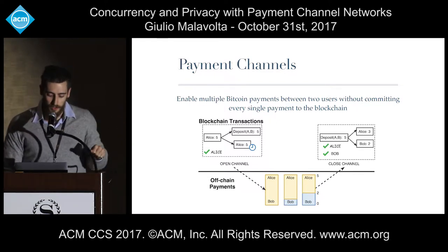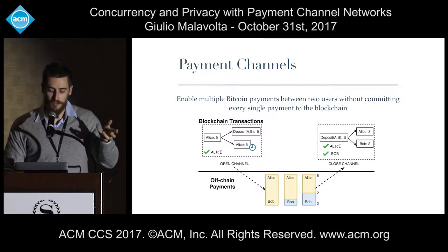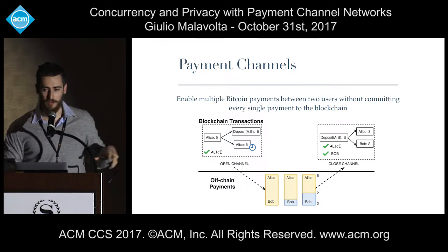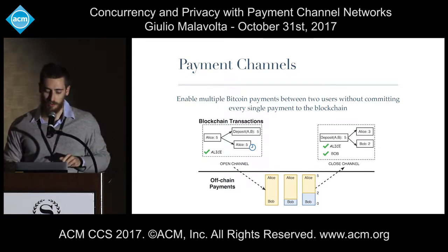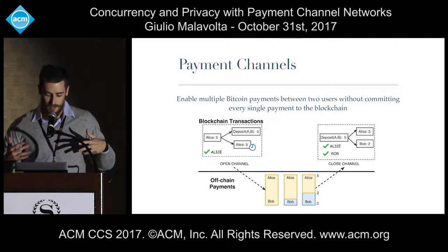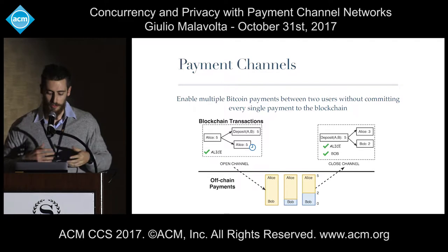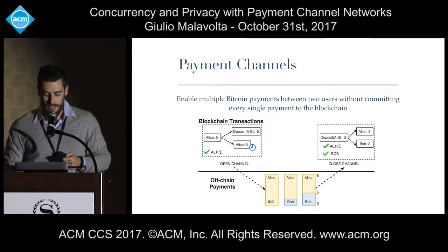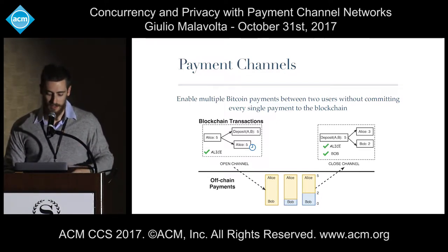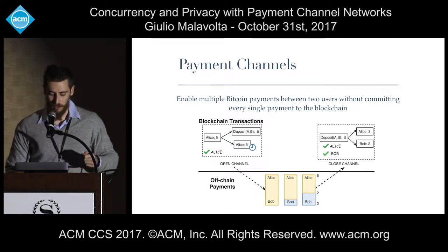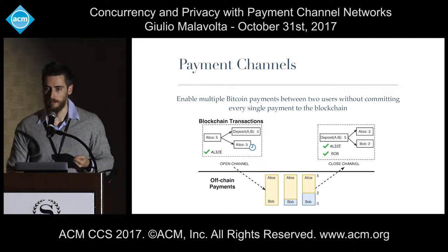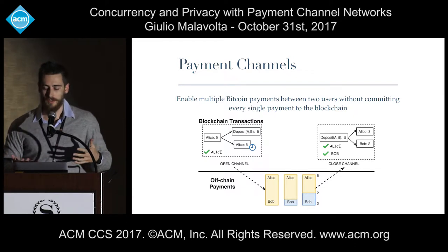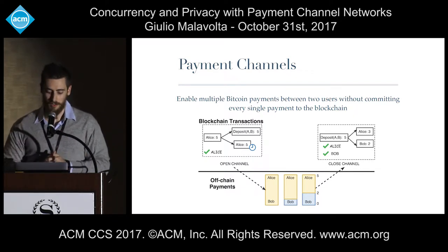Now, instead of doing a direct transaction to Bob, Alice can just send a signed transaction in an off-chain way — by any other means of communication — saying that a certain amount of funding will go to Alice's account and a certain amount to Bob's account. Whenever there is more than one transaction, Bob does not need to upload each stage of the transaction chain; he can simply wait until the channel is about to expire and upload the last one, redeeming all the money Alice proposed. The efficiency comes from the fact that there are multiple transactions between two users.